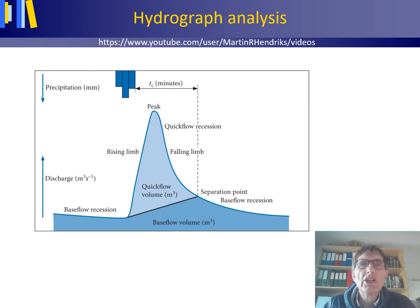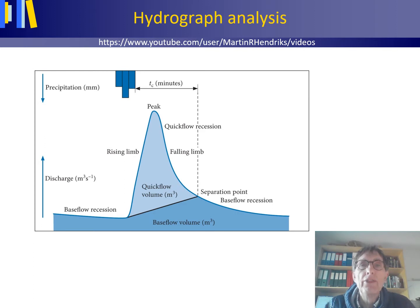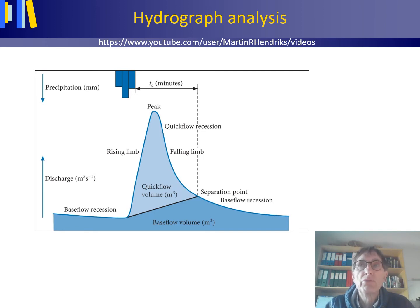This short video lecture is on hydrograph recession analysis. A hydrograph is the graph of the changes in discharge as a function of time. The recession curve is the part of the hydrograph showing a gradual decrease in discharge, thus after the hydrograph has reached its peak.